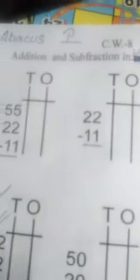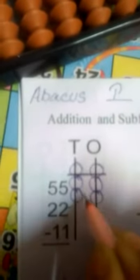Subject Abacus Class 1, 19-5-2020. Addition and Subtraction in Units and Tens Rod. 55, 55, 22, 22, Less 11.